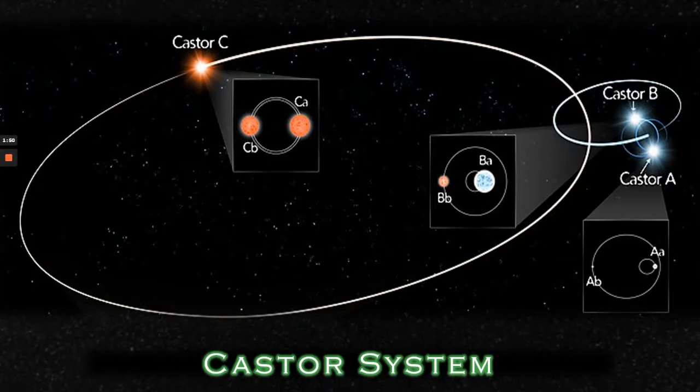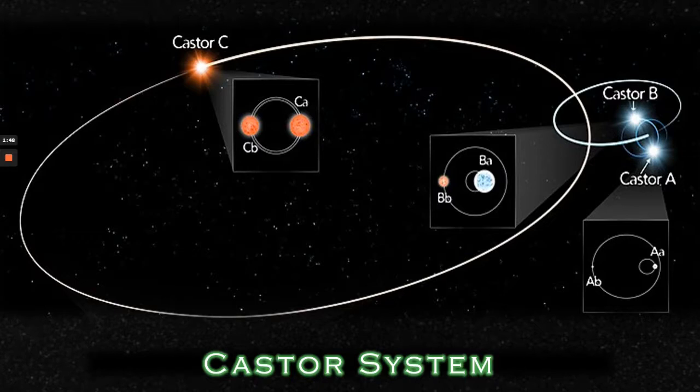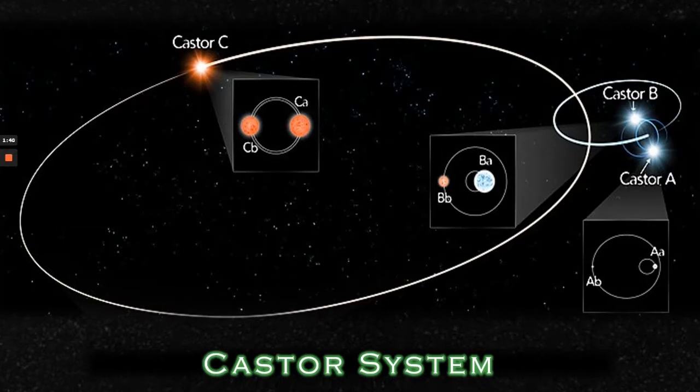These two pairings also have red dwarf companions, Castor C which comprises CA and CB which orbit the main pairings in a huge elliptical orbit in around once every 10,000 years.